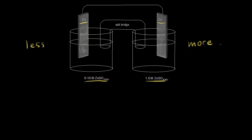How could we make these concentrations more equal? Let's focus on the less concentrated side first. The less concentrated side needs to get more concentrated, and it can do that by increasing the concentration of zinc 2+ ions in solution. If solid zinc turns into zinc 2+ ions, that increases the concentration. Solid zinc turning into zinc 2+ is oxidation, so oxidation occurs on the less concentrated side.